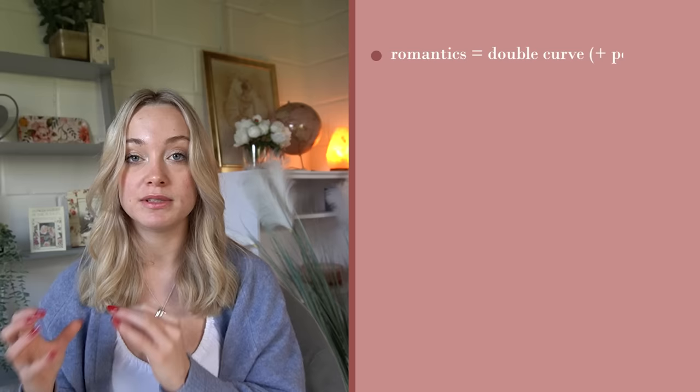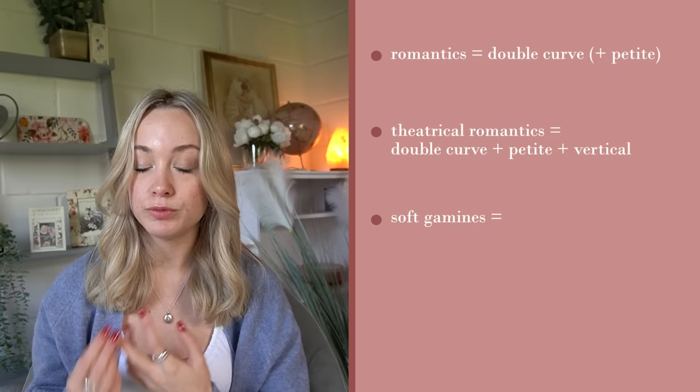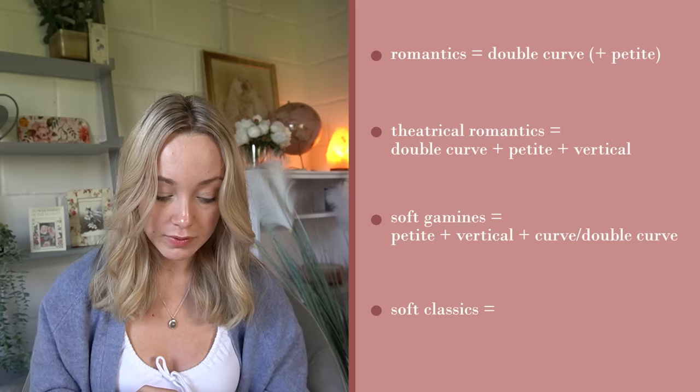Romantics are double curve and sometimes plus petite. Theatrical Romantics are double curve plus petite plus vertical, so Theatrical Romantics always have double curve. Soft Gamine's dominant features are petite and vertical — this is contrasted, so they're little and sharp — plus curve or double curve. And Soft Classics are balance plus curve, and very very occasionally double curve, but this is rare.